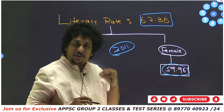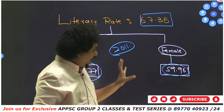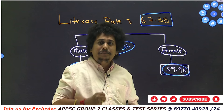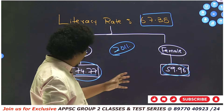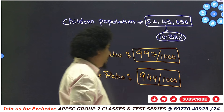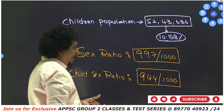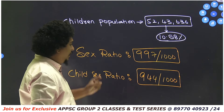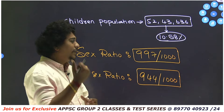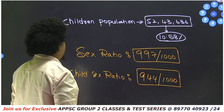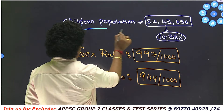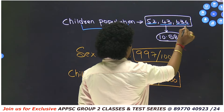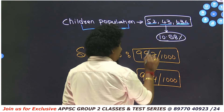The 2021 census, once released, will reflect many changes. Current government literacy schemes such as Jagananna Ammavodi, Vasati Deevana, and Vidya Deevana have contributed to improvement, and literacy rates are expected to rise significantly.